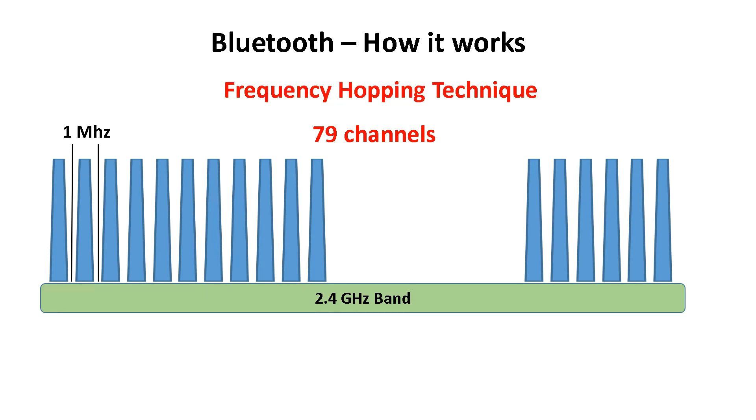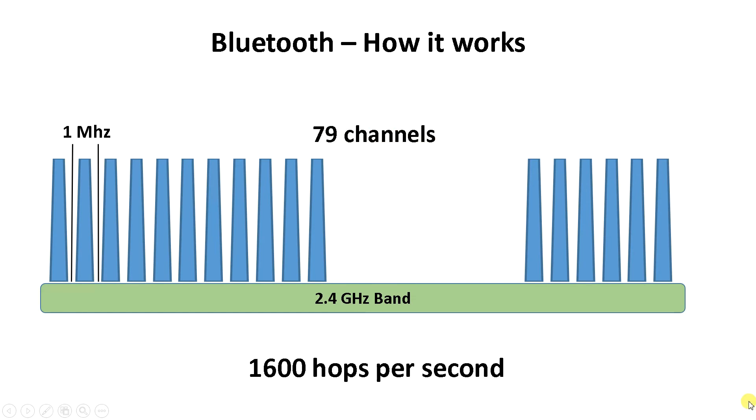Bluetooth devices use a technique called frequency hopping. In this technique, the transmitter hops from one channel to another in a pseudo-random fashion determined by the master and makes 1600 hops every second.